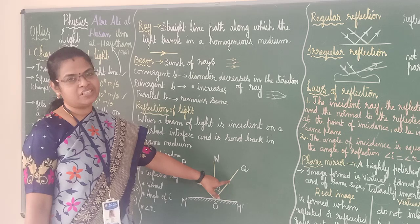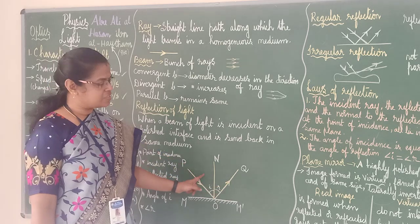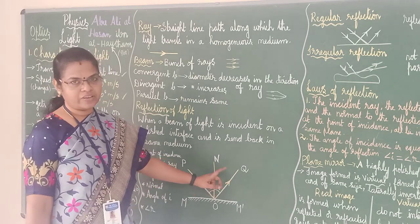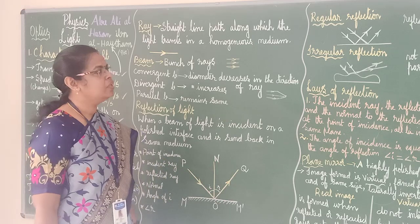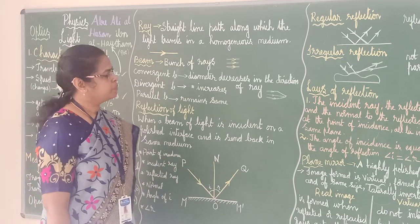The angle between the incident ray and the normal is called the angle of incidence. The angle between the normal and the reflected ray is called the angle of reflection. If the angle of incidence is 30 degrees, the angle of reflection is also 30 degrees. If it is 45, the angle of reflection is also 45.